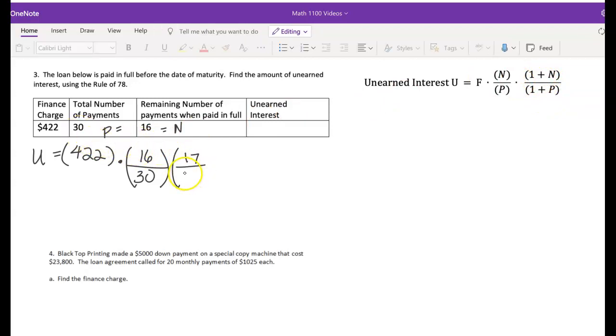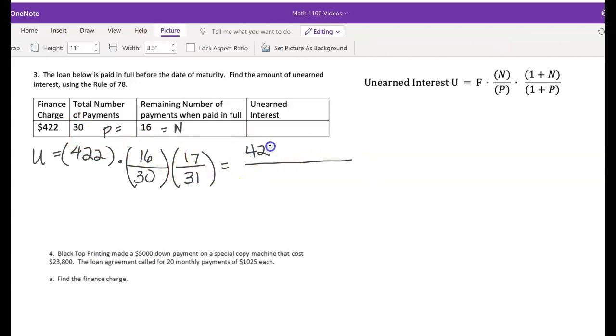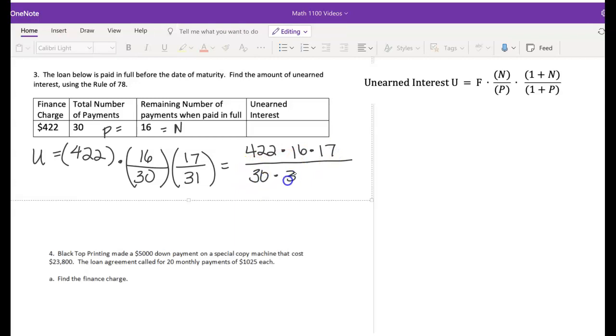And in our denominator, if P was 30, one more than that is 31. I like to write this as one large fraction, 422 times 16 times 17 in the numerator and 30 times 31 in the denominator. I tend to simplify the entire numerator all together. So 422 times 16 times 17 gives me a total of $114,784 and the denominator, 30 times 31 gives me $930.